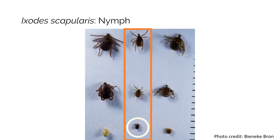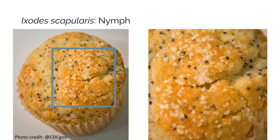It is also important to note that the size difference between nymphs and adults is quite large. Nymphs are very small, about the size of a poppy seed. Can you see them on this muffin?